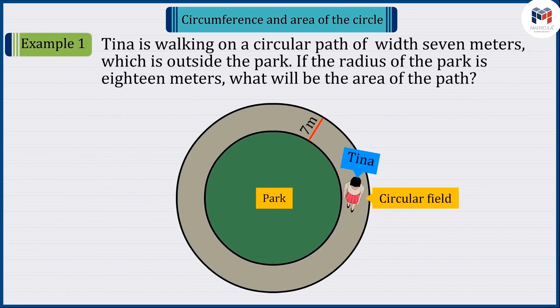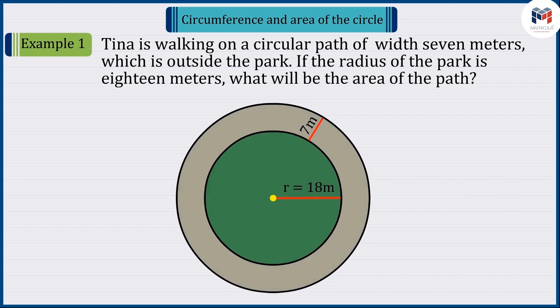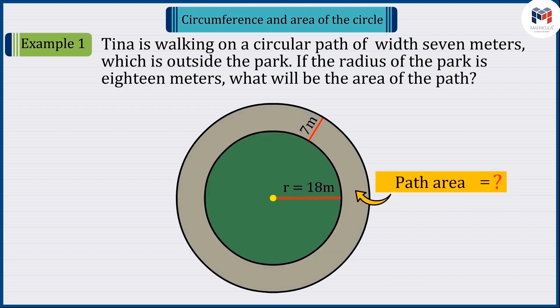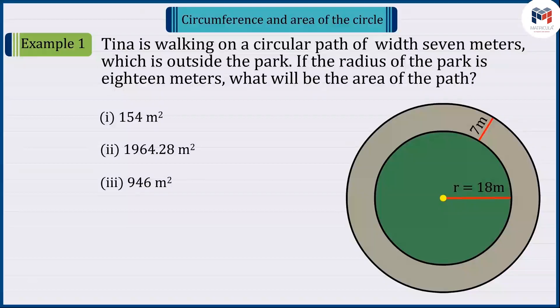Tina is walking on a circular path of 7 meters, which is outside this circular park. If the radius of the park is 18 meters, what will be the area of the path? Which of the following answers is correct? Pause the video to solve the question and then match your answer.